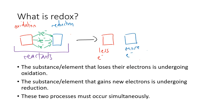The substance that underwent oxidation produces a new substance, and the substance that underwent reduction forms a new substance as well. So both substances on the left are reactants — one has undergone oxidation and one has undergone reduction.